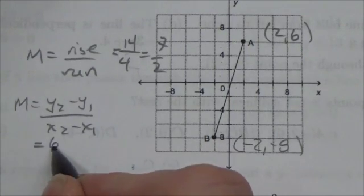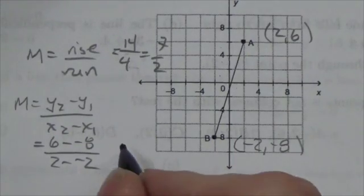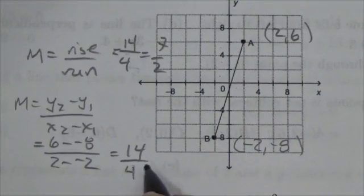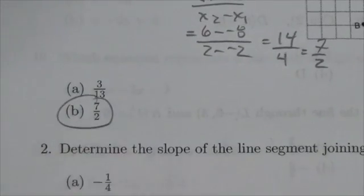those in here. So let's say 6 minus negative 8 over 2 minus negative 2. So 6 minus negative 8 is 14, and 2 minus negative 2 is 4, and so again we get seven over two. So our answer here has got to be B.